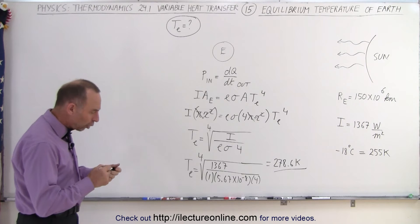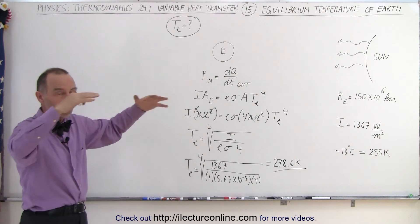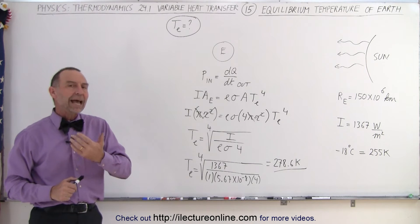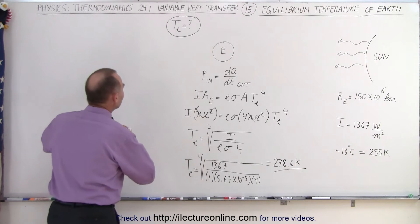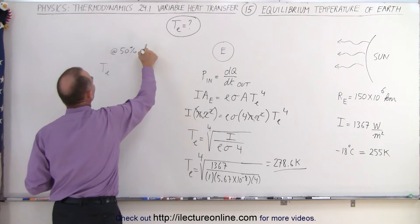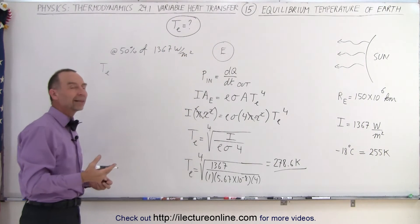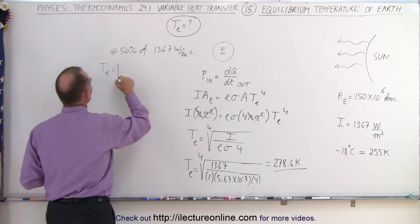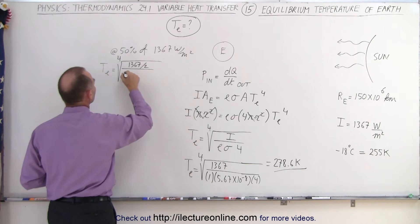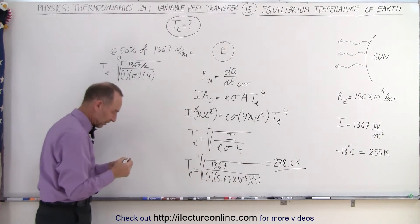Not all of the energy is absorbed — some is reflected from cloud tops, polar caps, and snow on the ground. So let's say only half of it gets through. In that case, we'd be working with 50 percent of 1367 watts per square meter. The equilibrium temperature would be the fourth root of 1367 divided by two, divided by sigma (5.67 times 10 to the minus 8), divided by four.